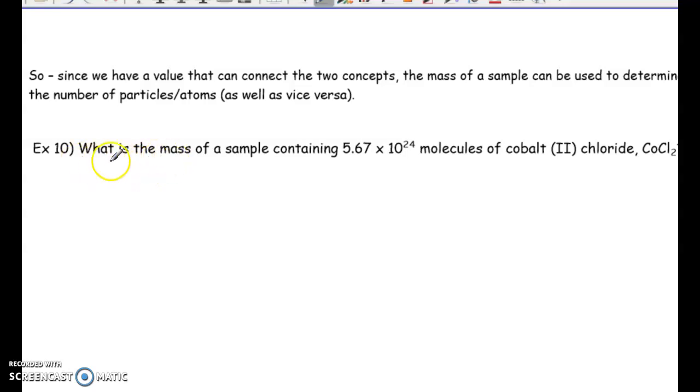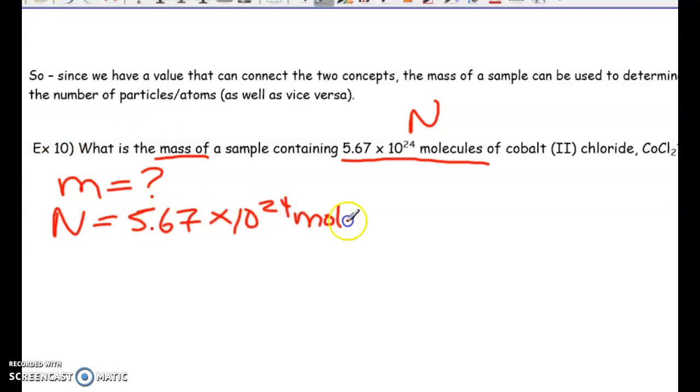Okay, so we're looking for what is the mass of a sample. So we want the mass, but they're telling us that there are 5.67 times 10 to the 24 molecules of cobalt-2 chloride. So this is actually our N value, 5.67 times 10 to the 24 molecules, and that's for cobalt-2 chloride.